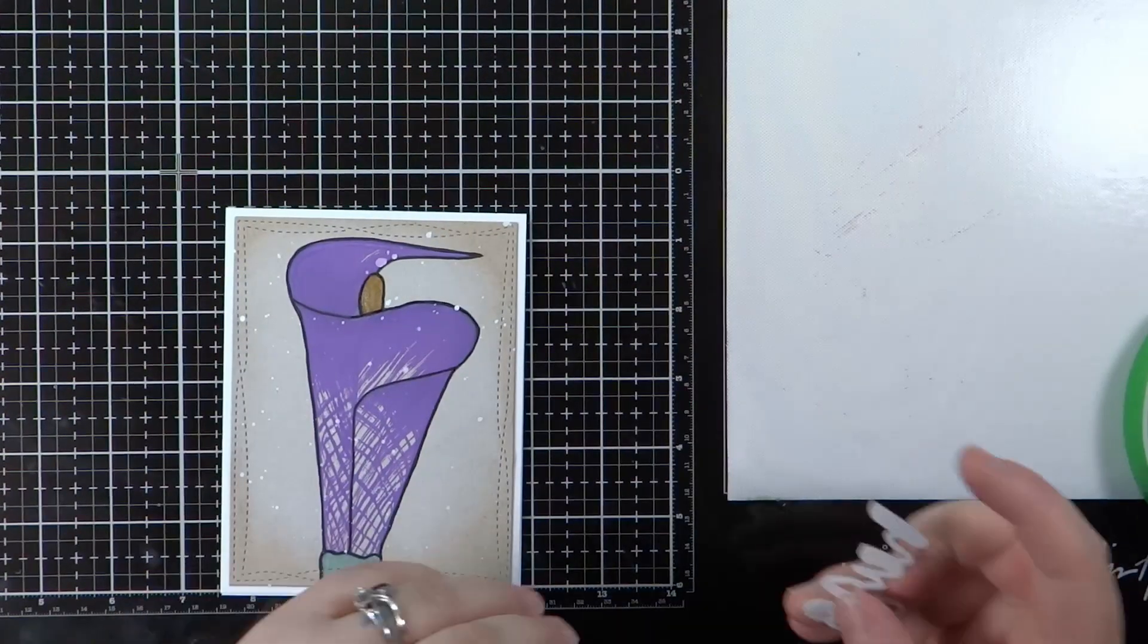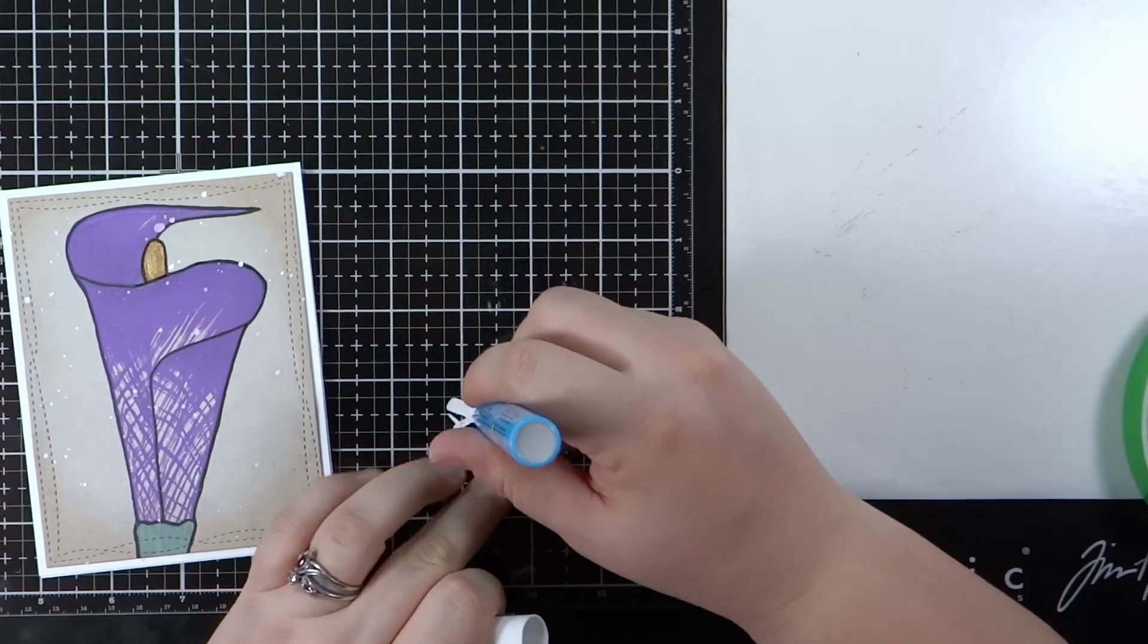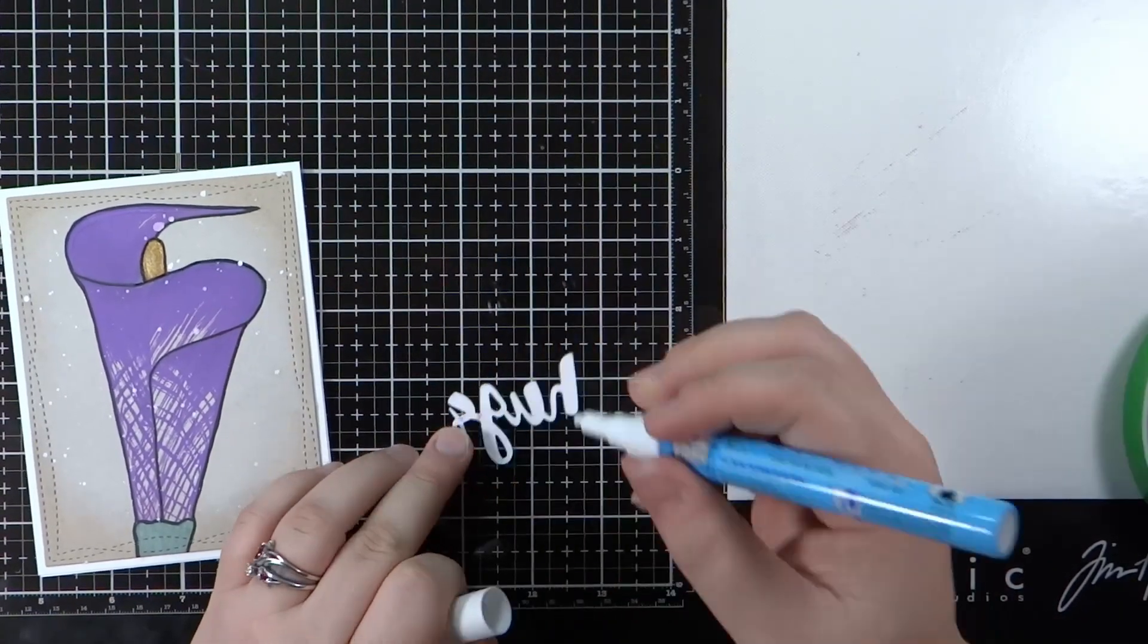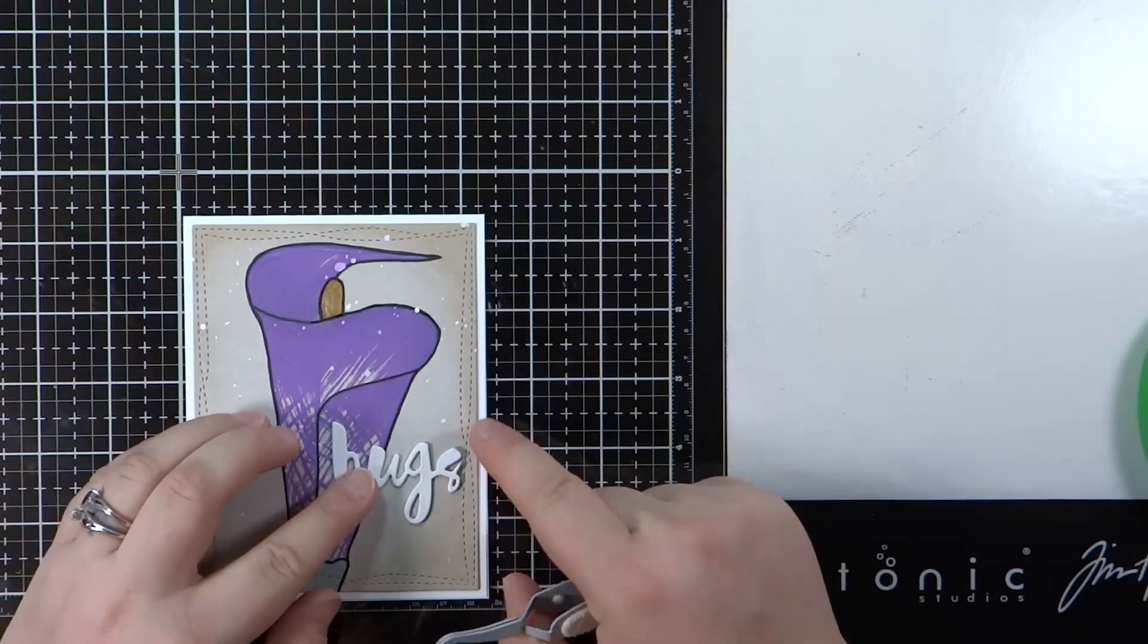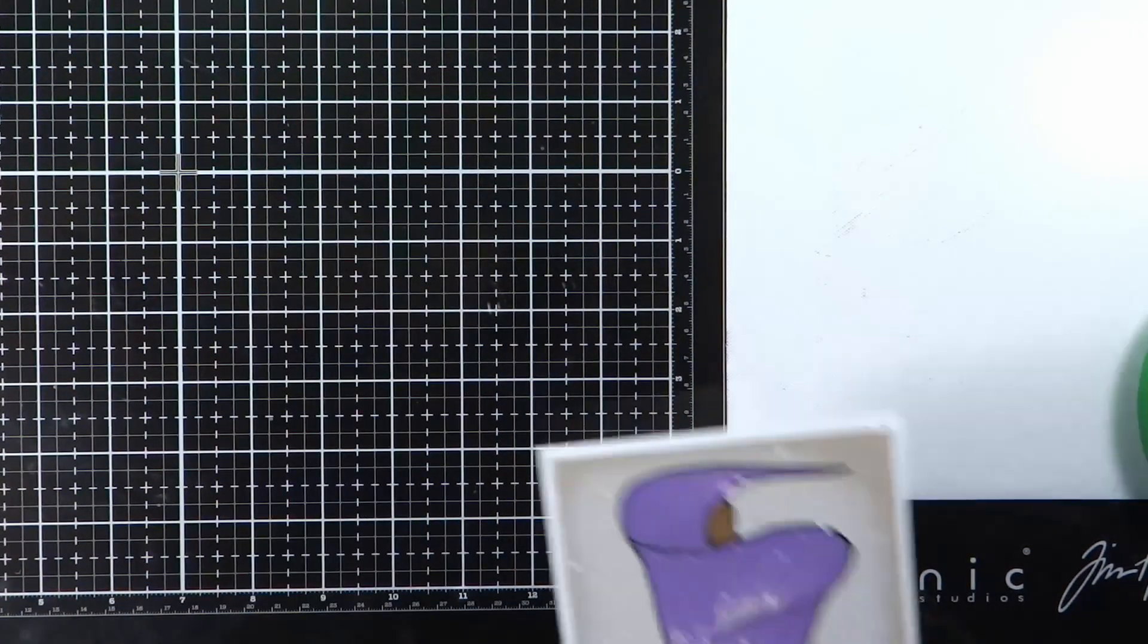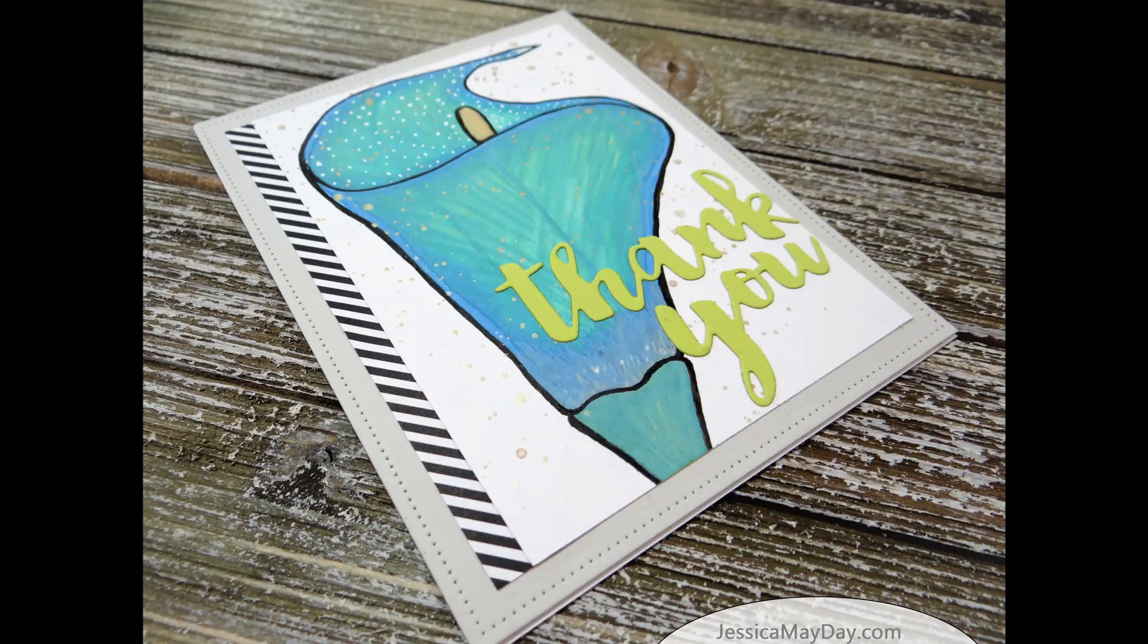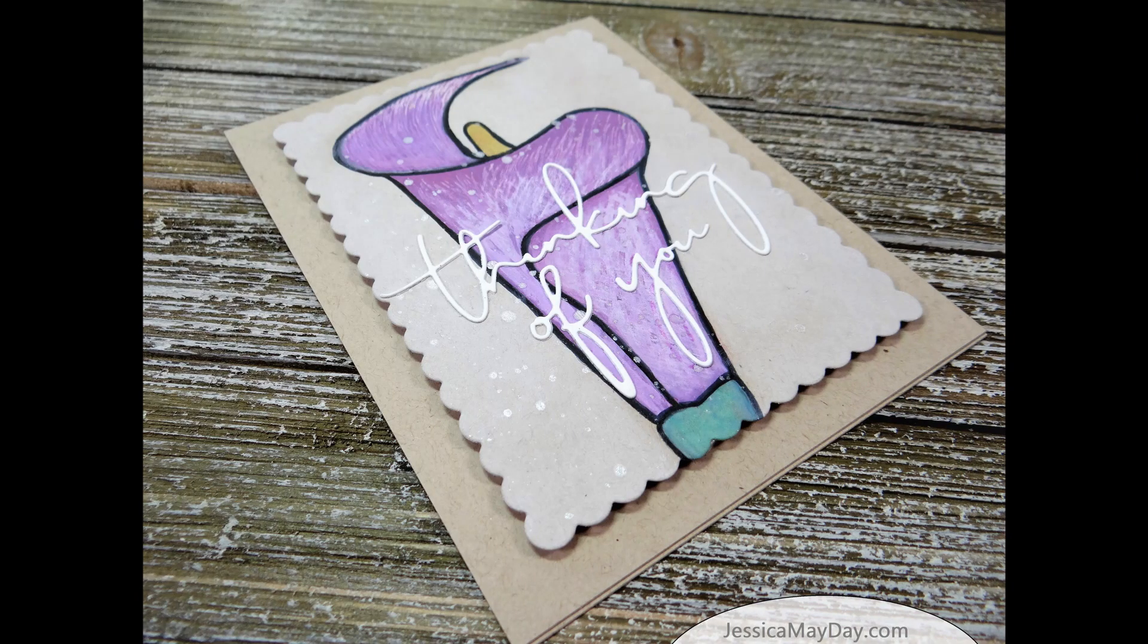So as you can see you can get quite a few different looks to this. They all came out just a little different. If you have a Fiskars stamp press that you haven't used in a long time maybe you'll pull it out and use it for this technique. And that's it for these cards.